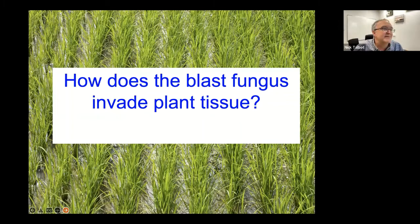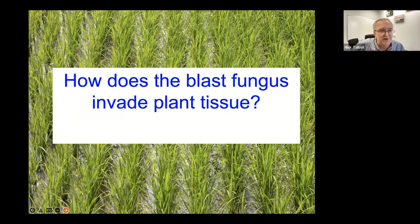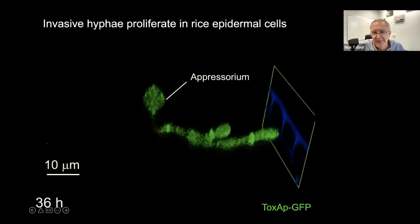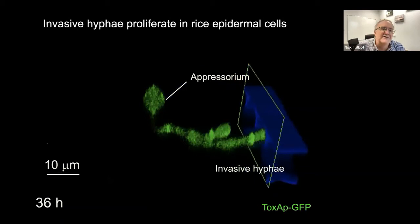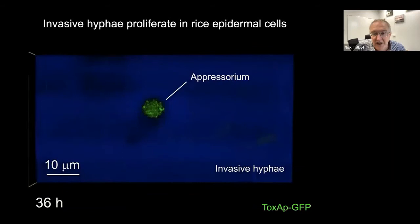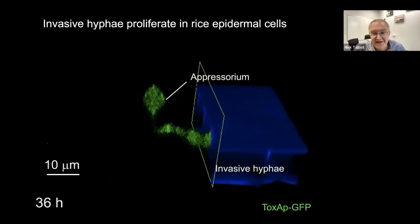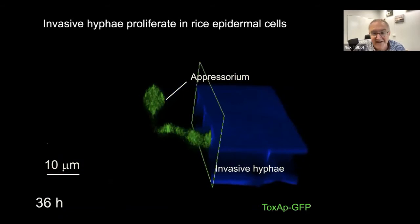Once the penetration peg has ruptured the cuticle and gained entry, we can computationally remove plant tissue and see what's inside. We see bulbous, branched invasive hyphae. These grow differently from classical fungal hyphae — more like pseudo-hyphal yeast cells, undergoing axial budding. This budding mode of growth occurs initially, and then eventually the hyphae become more classically cylindrical as they move from cell to cell.